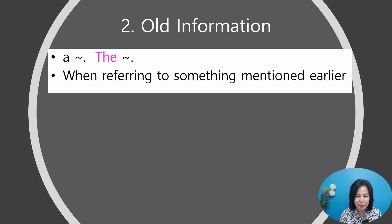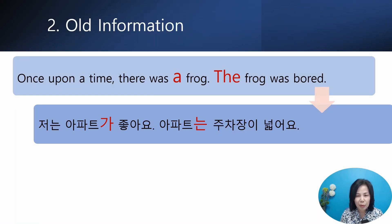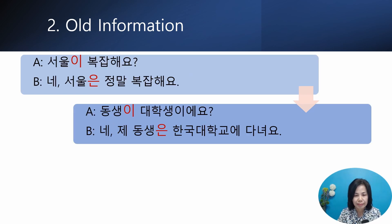Second usage: all the information. 은/는 is also used when referring to something mentioned earlier in a conversation or something already known by both sides. In other words, 은/는 is used when expressing known information, like 'the' in English. For example: 'Once upon a time there was a frog. The frog was bored.' Similarly, 저는 아파트가 좋아요 → 아파트는 주차장이 넓어요. Just as 'a frog' became 'the frog,' 아파트가 becomes 아파트는. New information uses 이/가, and known information uses 은/는.